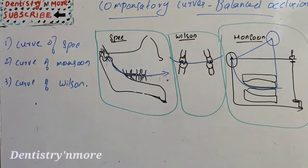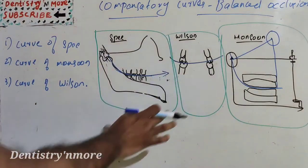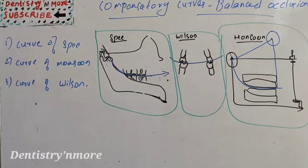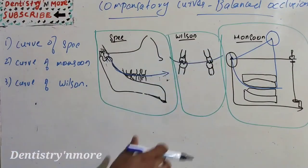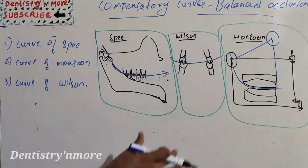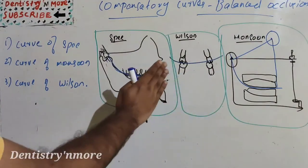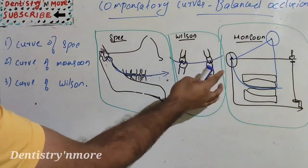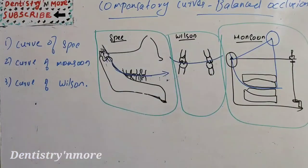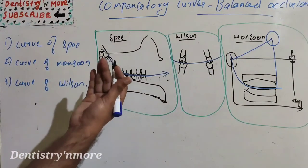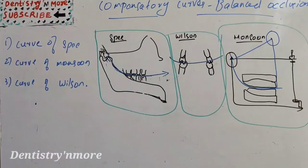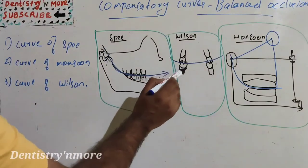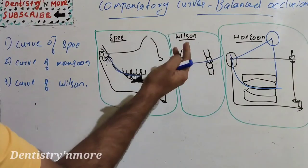The second one is curve of Wilson. It is basically to arrange the molars. You can see the molars are arranged here. The lower teeth are inclined lingually, so there is a lingual inclination of lower teeth which gives prominence to the buccal cusps and brings them into a heavy occlusal contact with the upper buccal cusp.